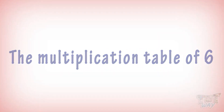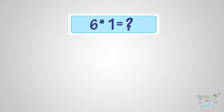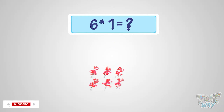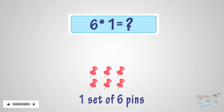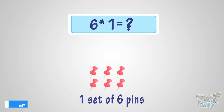What is six multiplied with one? It is the same as one set of six pins. So it is six pins. That is, six multiplied by one is six.